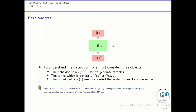Besides, we need to consider the critic that will be trained using the samples from a behavior policy, and this critic can be a value function, an action value function, or even an advantage function. And finally, we have the target policy, which is used to control the system in exploitation mode. The goal is to learn this policy optimally by using behavioral samples and training the critic.